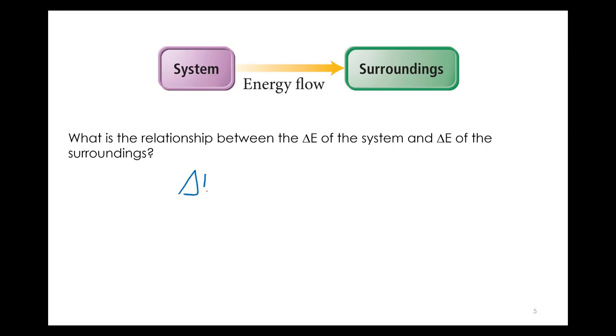So let's calculate the change in energy of the system, we usually abbreviate SYS. Delta E SYS is the change in internal energy of the system. And we came up with the equation yesterday, it's just always going to be final minus initial.